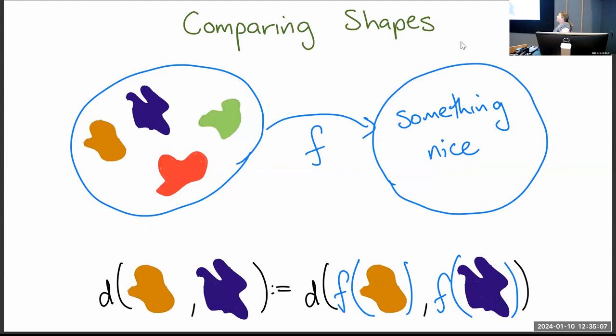One way to do this is to take my collection of shapes and instead of thinking of the shapes directly, I take a function from these shapes into some other space which is nice. I put my shapes into a space where I have a metric — a notion of distance — and then I define the distance between two shapes as the distance between their images in that nicer space.